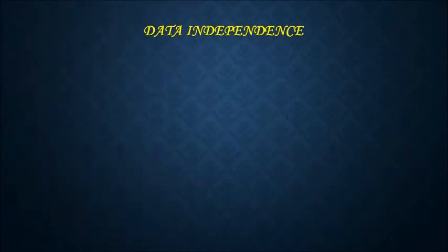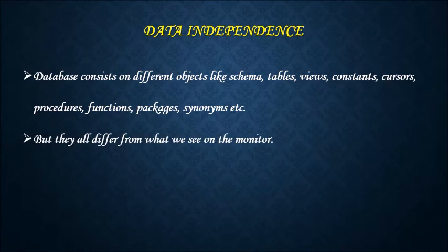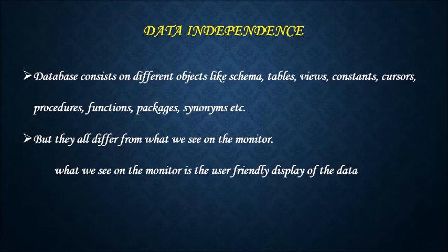Database consists of different objects like schema, tables, views, constants, cursors, procedures, functions, packages, synonyms, etc. They have their specifications, tasks, and values in the database, but they all differ from what we see on the monitor. What we see on the monitor is the user-friendly display of the data.